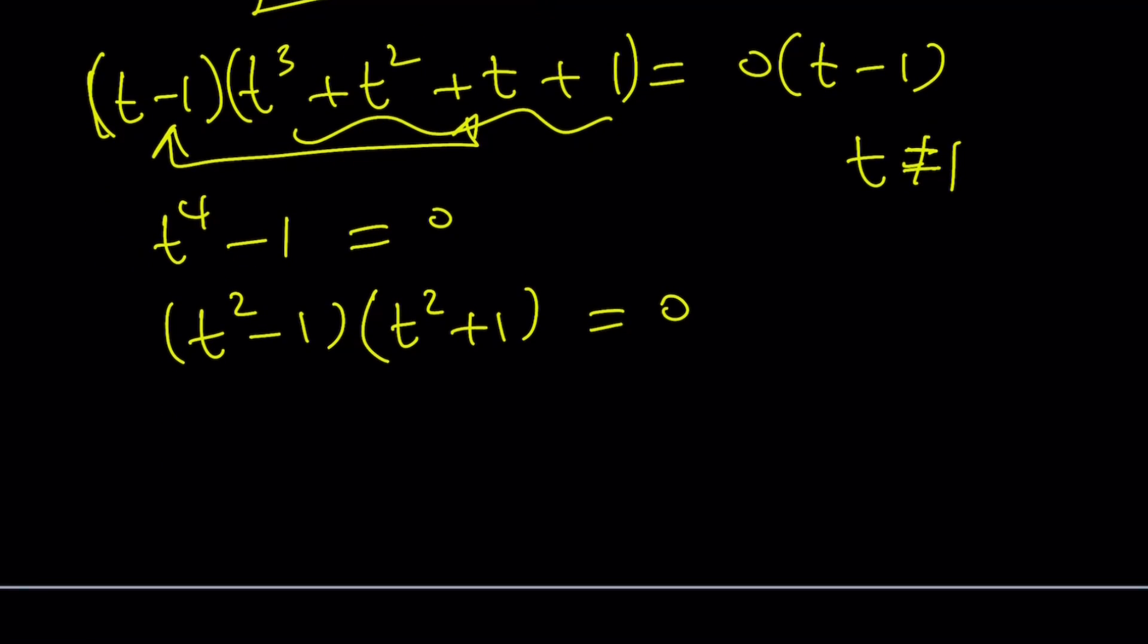And from here, obviously, we're going to exclude t = 1. But everything else, we're going to take. So we take t^2 = 1 gives us t = 1 and t = -1. But obviously, we have to exclude t = 1 in this case.